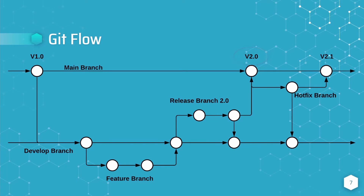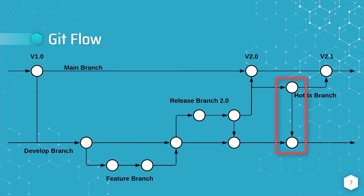In a perfect world, the changes merged from the release branch into the main branch are bug free. Since it is unrealistic to expect that this is the case every time a release branch is merged, the Git flow includes hotfix branches. The hotfix branch is created directly off of the main branch to quickly address issues introduced by the changes that are now in production. In addition to merging the hotfix branch back into the main branch, it is also very important to merge the hotfix branch into the develop branch to ensure that any new development work incorporates the hotfix.